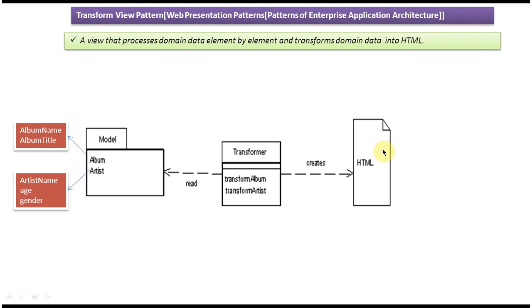This transformer reads and converts the domain object information to HTML. So once you display the information in HTML, users can view easily. Okay, so this is about transform view pattern. Thanks for watching, bye.